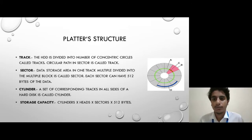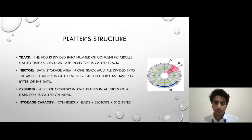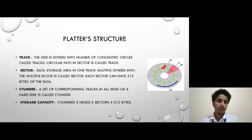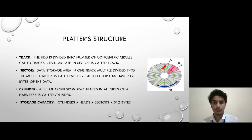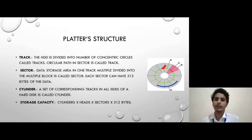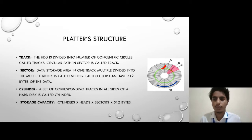First is the track. The hard disk is divided into a number of concentric circles called tracks. A circular path divided into sectors is called a track. Next is the cylinder. A set of corresponding tracks on all sides of a hard disk is called a cylinder.